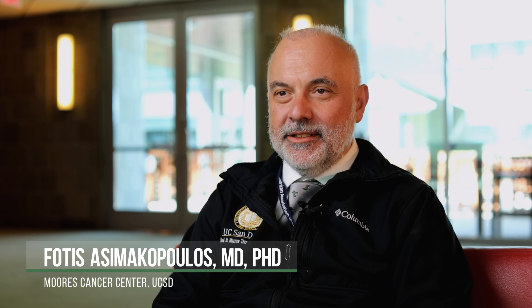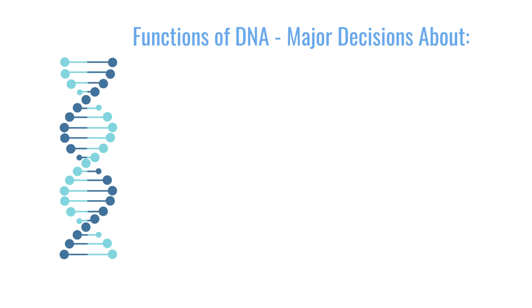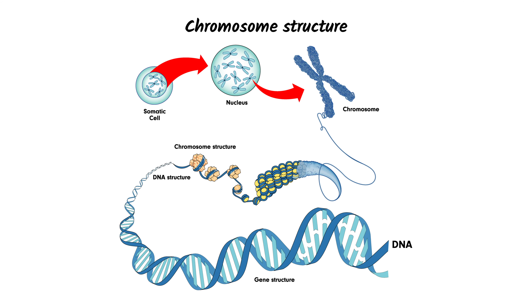What is a chromosome? A chromosome is a unit of organization of your DNA. The DNA is essentially the central command in the cell, so all major decisions about identity, about life and death, are encoded in the DNA. In every individual cell, those three billion coding bases are not simply stretched out and floating around — they are wound very tightly into structures we call chromosomes.